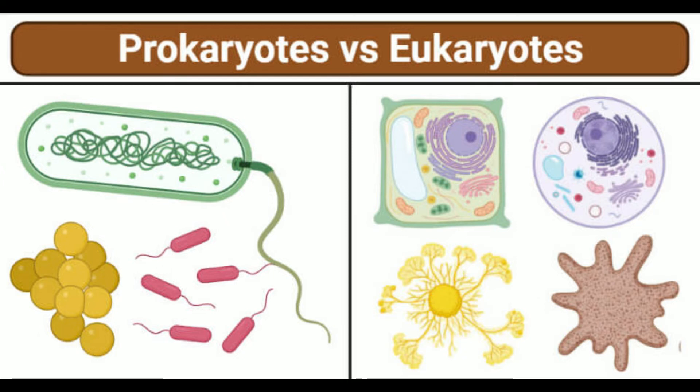Prokaryote Examples – Bacterial Cells: Bacteria are single-celled organisms found in all ecosystems throughout the world. The cell wall of bacterial cells is formed of peptidoglycan, making it tough and thick. Capsules are unique to some bacteria and may not be present in other prokaryotic cells. The genetic material of bacteria is present in the form of circular coils of chromosomes. Examples of bacterial cells include E. coli and Streptomyces spp.